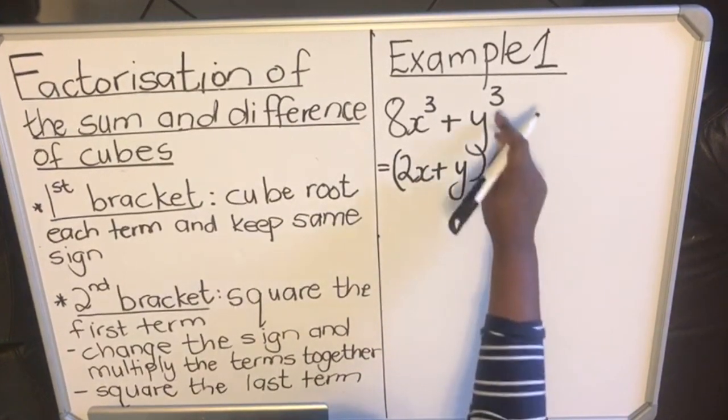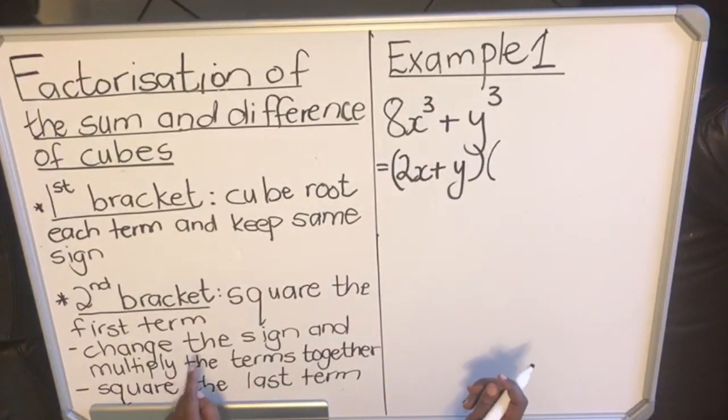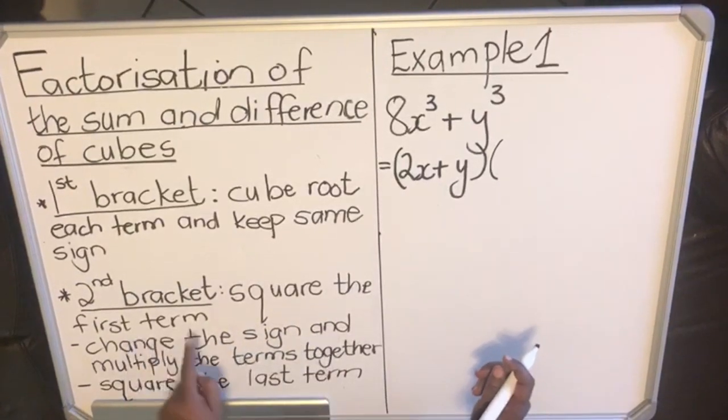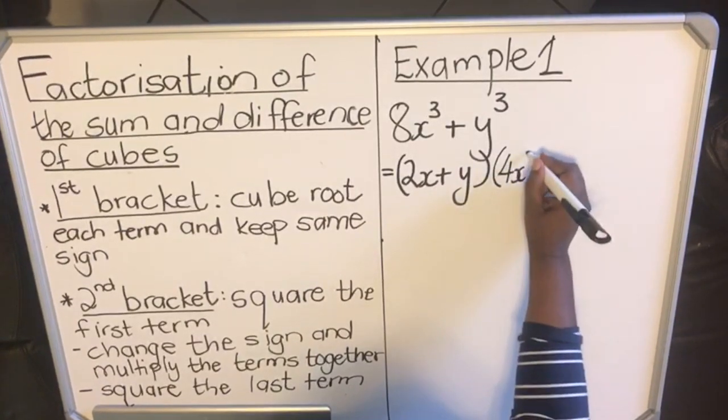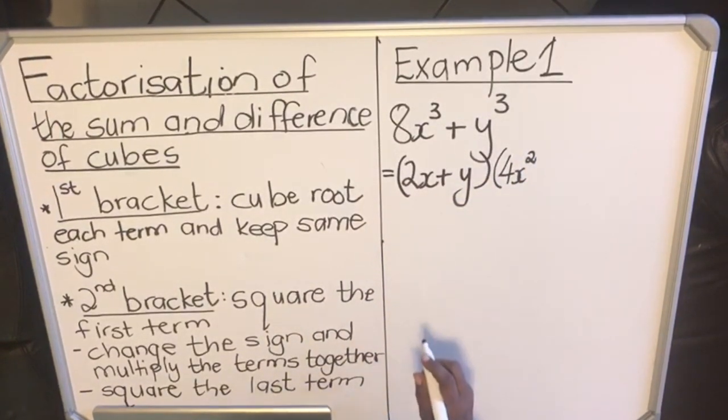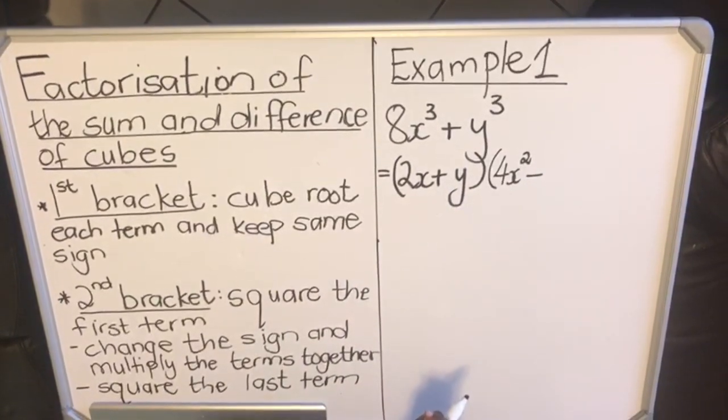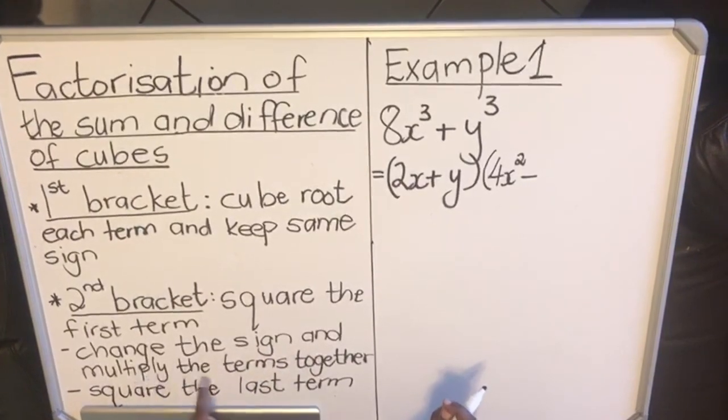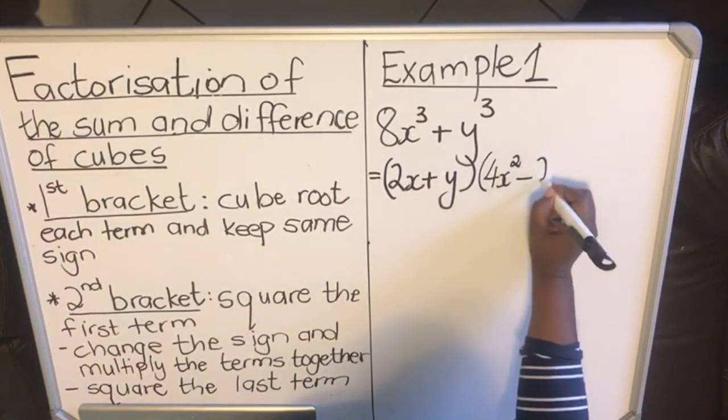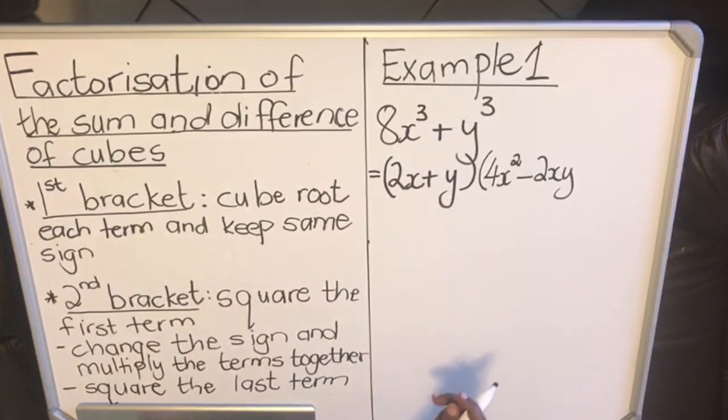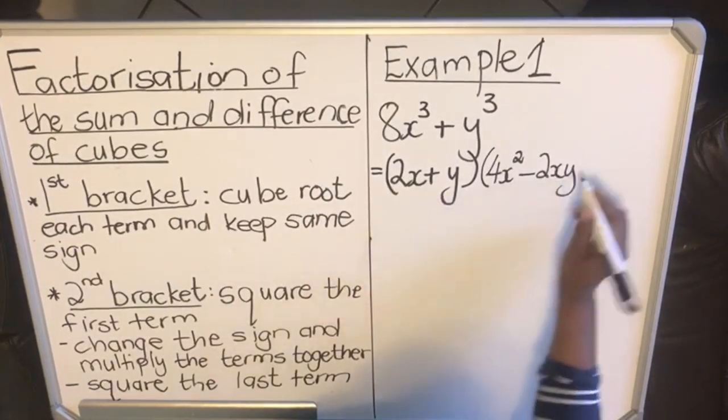Then we go to the second bracket. In the second bracket we're going to square the first term - the first term is 2x, 2x times 2x is 4x². And then change the sign - we have a plus, we're going to write a minus. And then what we do, we multiply the terms together - we're going to multiply the 2x and the y together and get 2xy. And then with the last term we're going to square the last term - y times y, positive times positive is positive, y times y is y². This is how you factorize cubes.